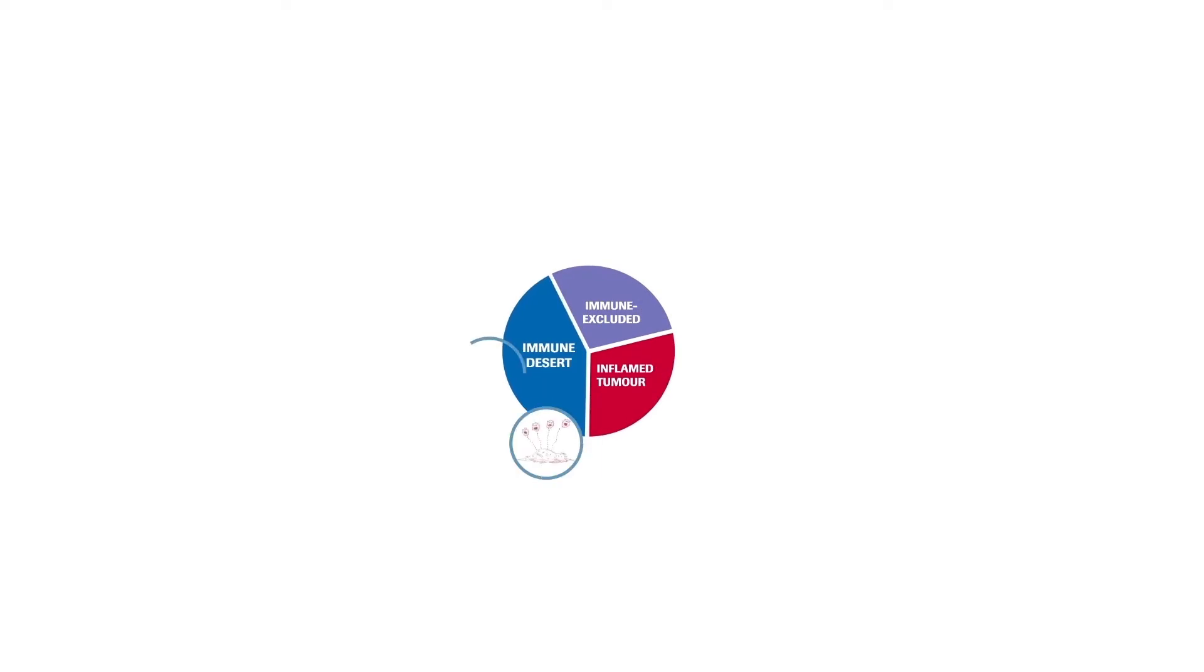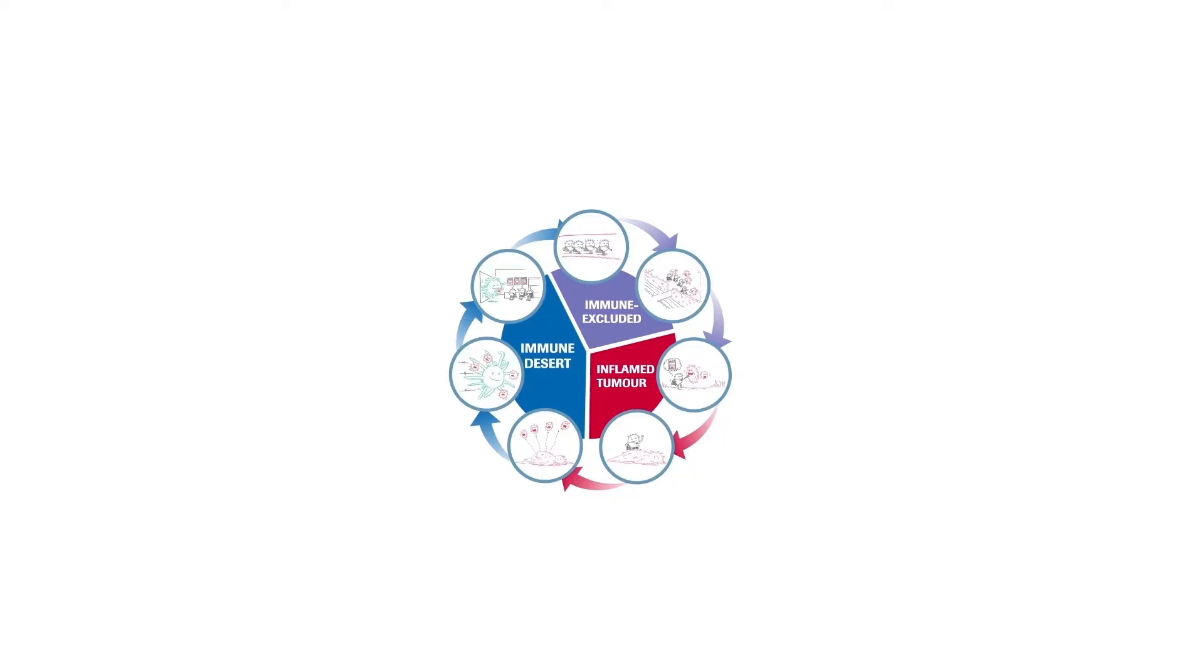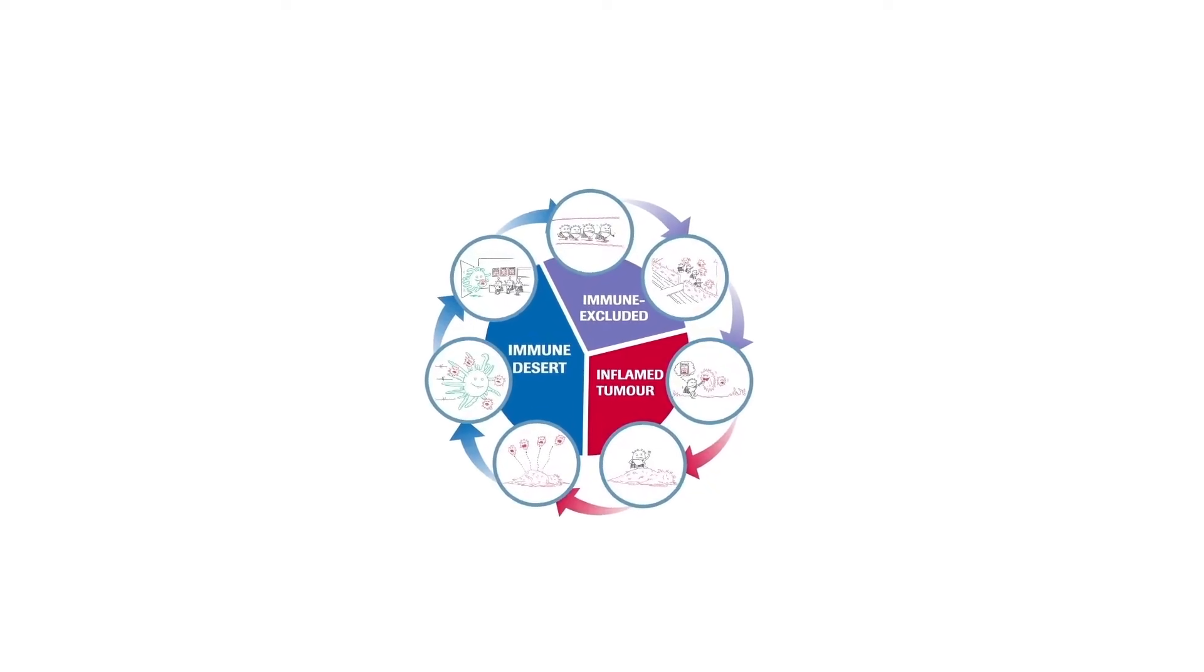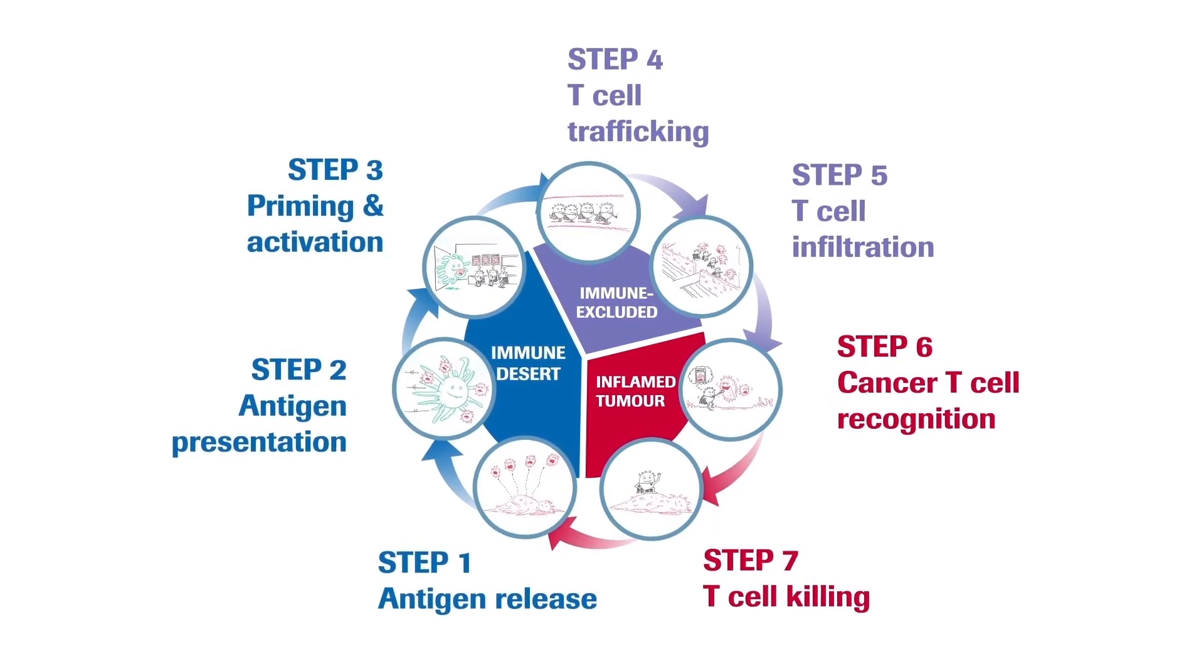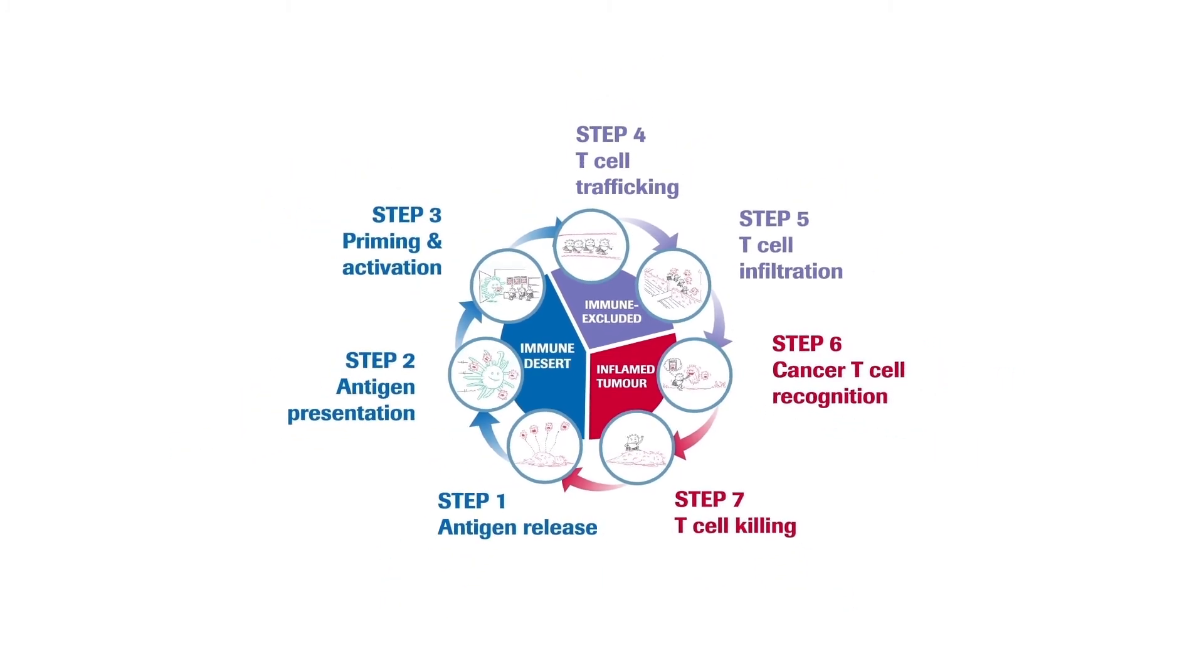The cancer immunity cycle is a framework that my friend and colleague Dan Chen and I devised, which helps to describe how a tumor interacts with the immune system. We've broken that down into seven major steps. Here's Dan to explain the seven steps.